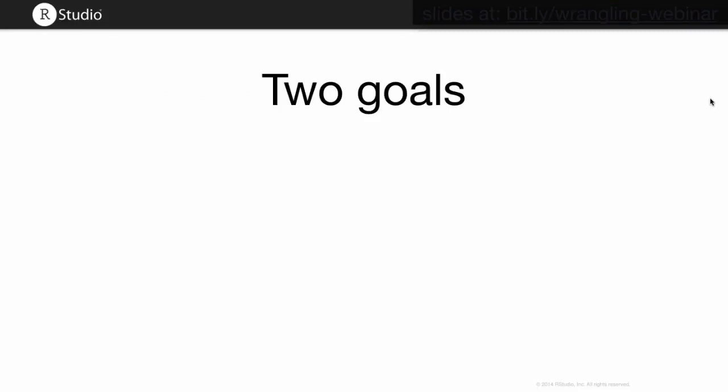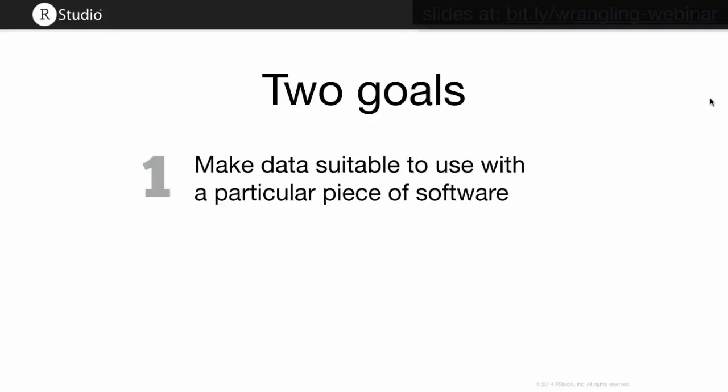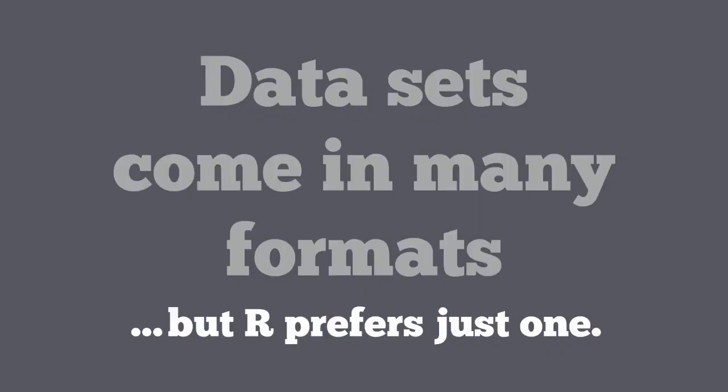Normally when you wrangle your data, you have two goals. First, you might need to make your data set suitable to a particular piece of software — in this case, R. And second, you can actually reveal information by changing the format and structure of your data. Let's start with this first goal: making our data suitable for R.